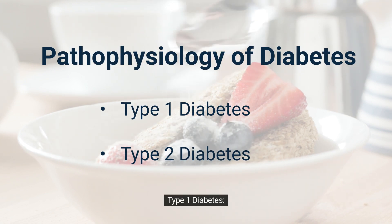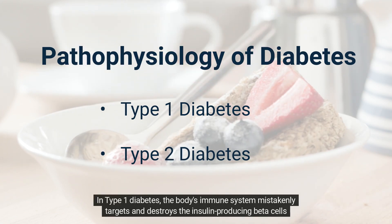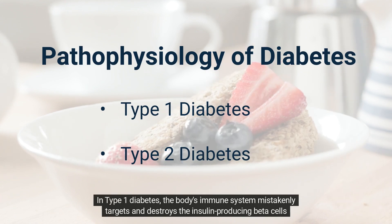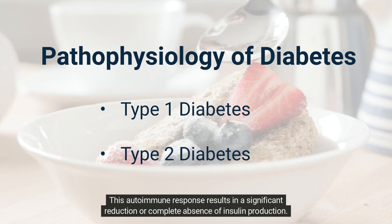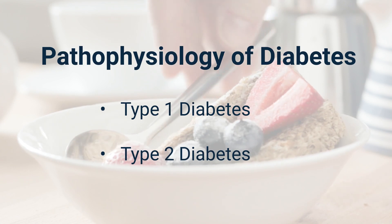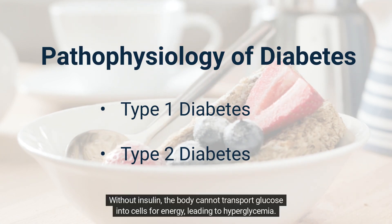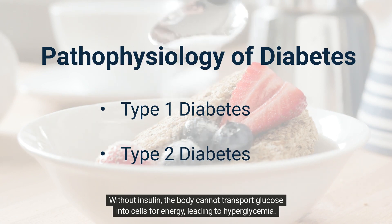Type 1 Diabetes: In type 1 diabetes, the body's immune system mistakenly targets and destroys the insulin-producing beta cells in the pancreas. This autoimmune response results in a significant reduction or complete absence of insulin production. Without insulin, the body cannot transport glucose into cells for energy, leading to hyperglycemia.